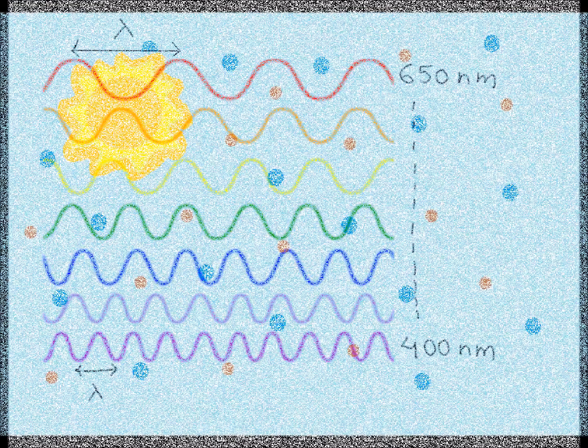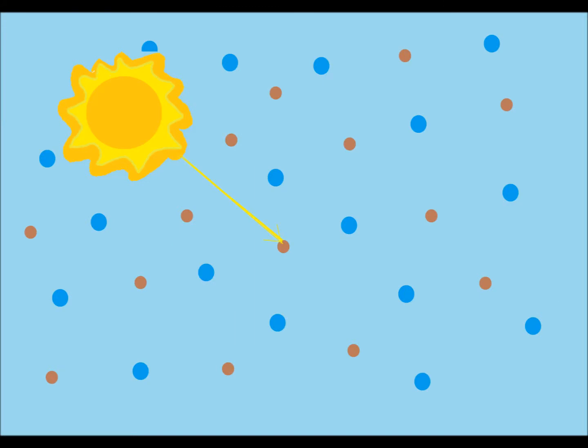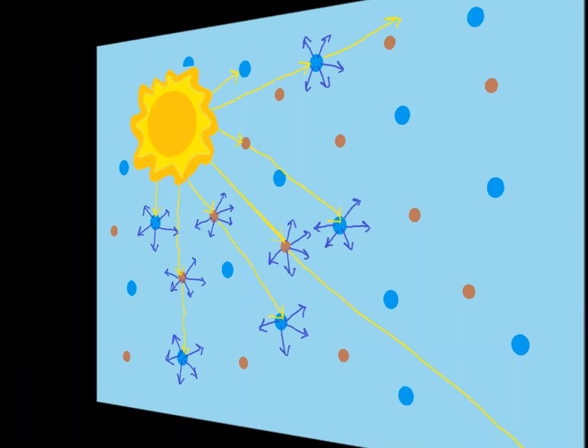When the white light from the sun shines through the Earth's atmosphere, it collides with gas molecules. These molecules absorb some of the light. Shorter waves like blue and indigo get absorbed more than red and orange. After a while, the molecules release the same colors in all directions. This process is known as scattering.